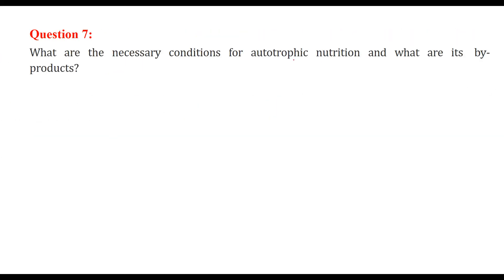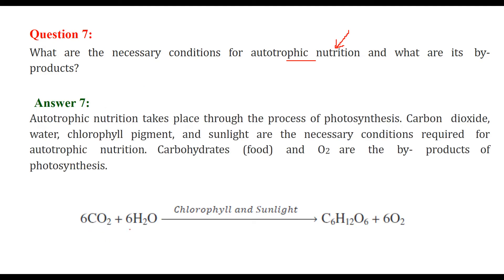What are the necessary conditions for autotrophic nutrition and what are its by-products? Autotrophic nutrition is making food by the plant or anything which makes its own food. It takes place through the process known as photosynthesis. Carbon dioxide, water, chlorophyll pigments, and sunlight are all necessary conditions required for autotrophic nutrition. The carbohydrate — that is the food — and oxygen are the by-products of photosynthesis. These are oxygen and C6H12O6, which is food.